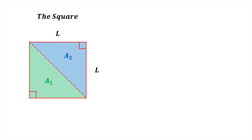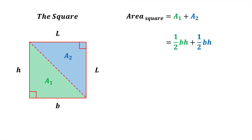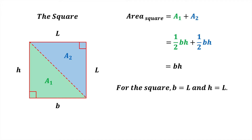We can see that the area of the square is the sum of the triangular areas a1 and a2. Notice also that the base and height of both triangles are all equal to the length of each side. Therefore the area of the square equals half base times height of the first triangle plus half base times height of the second triangle. These two terms are like terms and can be summed together to give the area of the square as base times height. However for the square the base and the height are both equal to the length, so the area of the square equals length times length, or length squared.